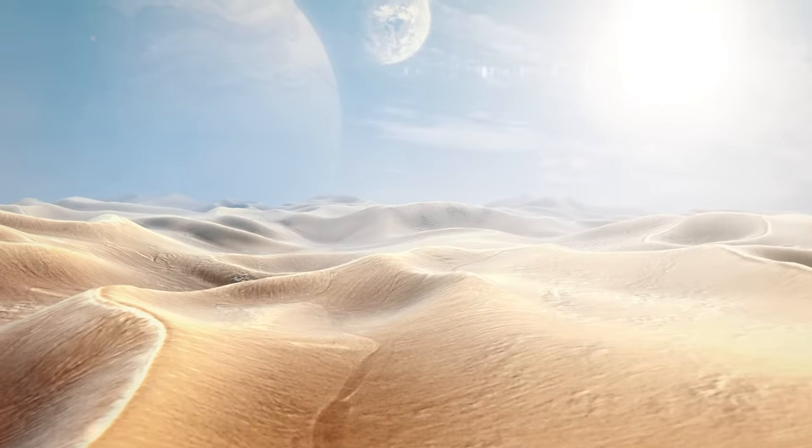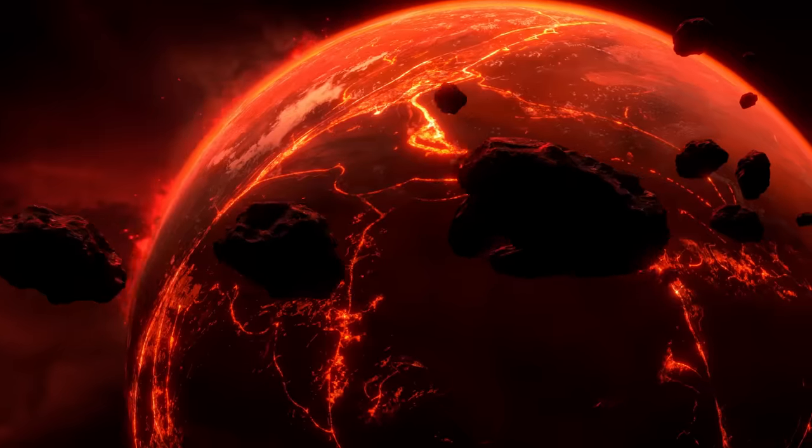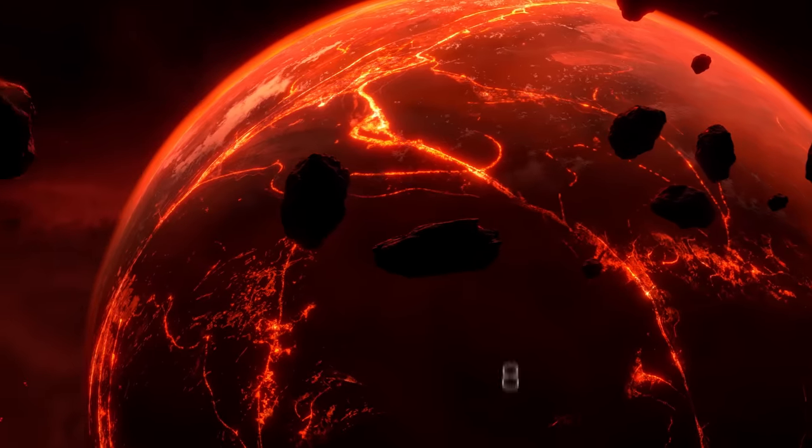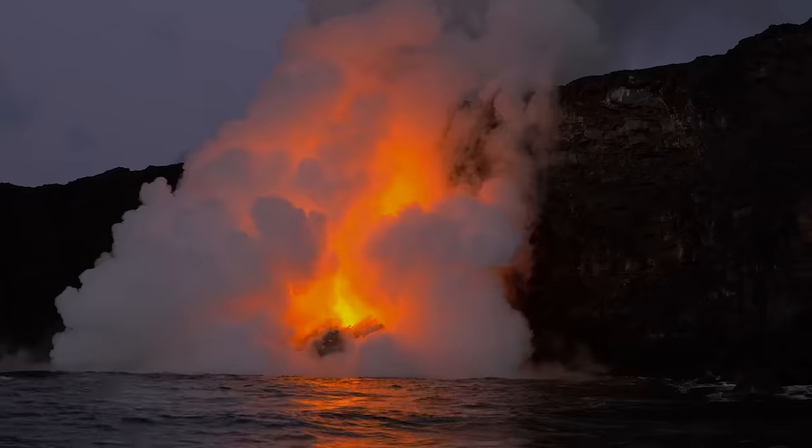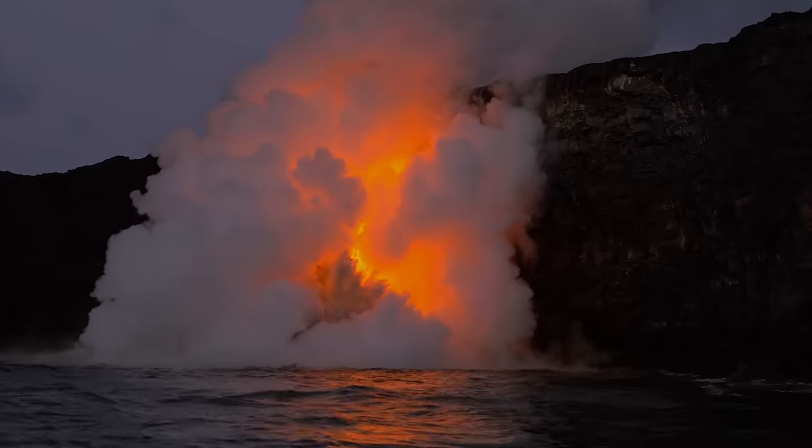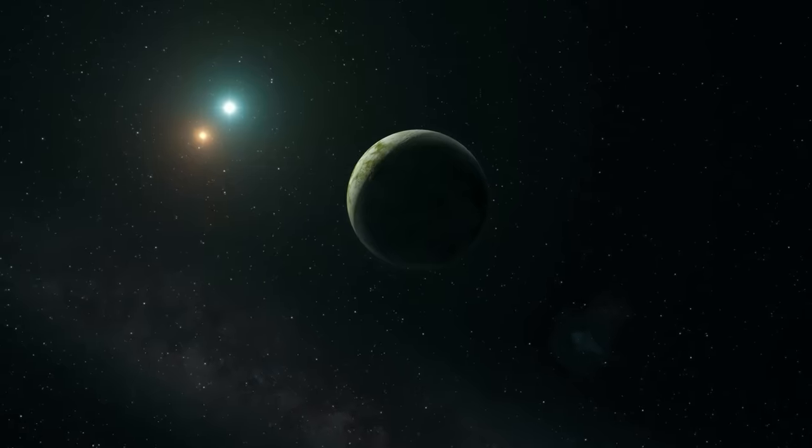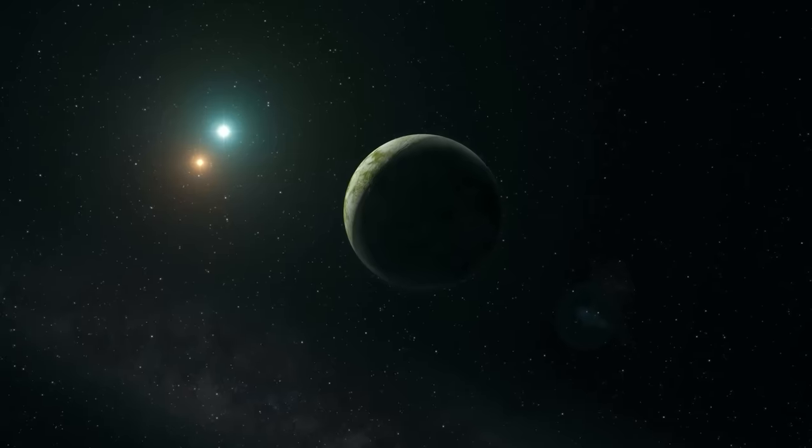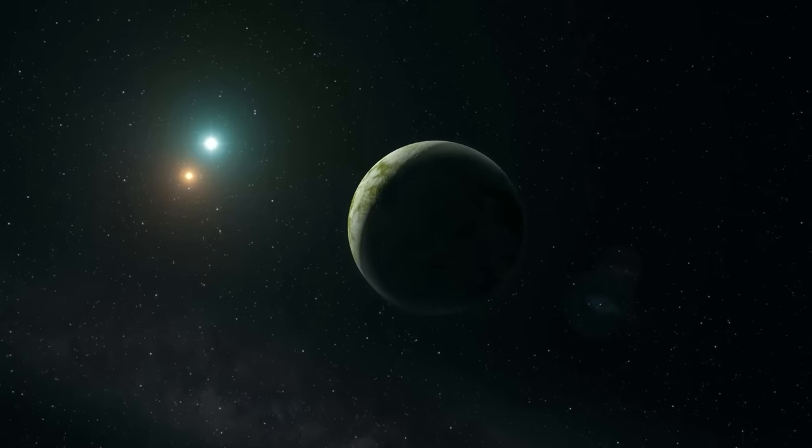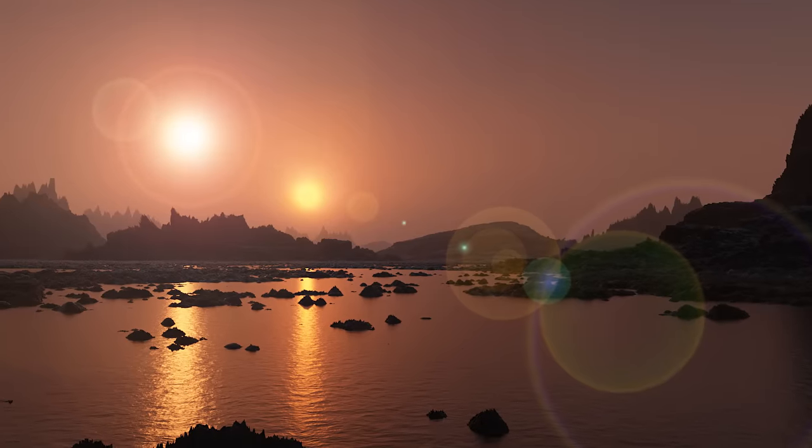And there are some very strange worlds. Some have star-facing sides with temperatures that can melt iron and have entire hemispheres covered with oceans of liquid molten rock. Other exoplanets the size of Jupiter orbit not one, but two stars.